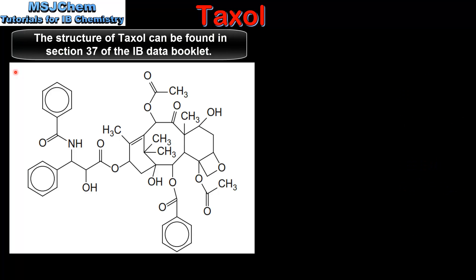Next we look at the structure of Taxol and identify some of the functional groups. We have a phenyl group, we have a carboxamide group, we have a hydroxyl group, and we have an ester group.